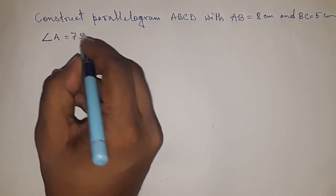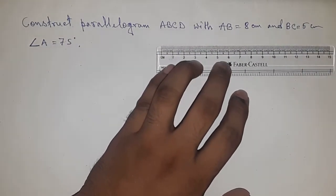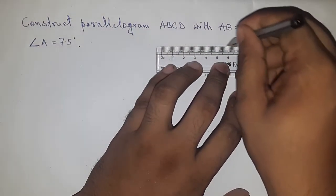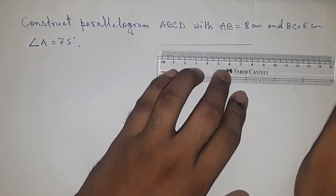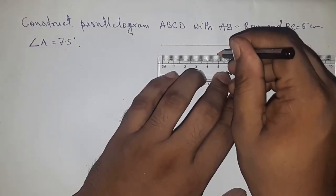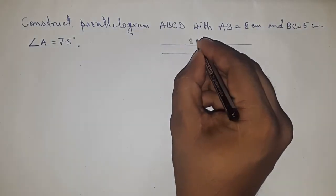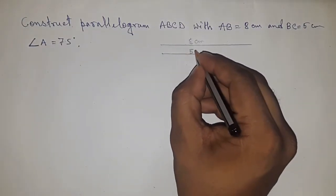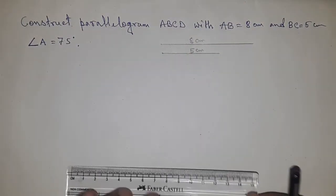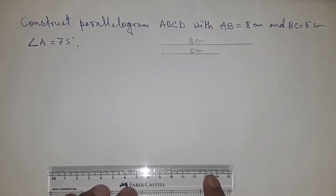So now I am drawing the parallelogram. First drawing the two sides here. The first side is 8 centimeter and BC equal to 5 centimeter. This is 8 centimeter and this is 5 centimeter. Now drawing here a line of any length.